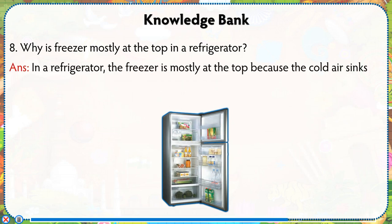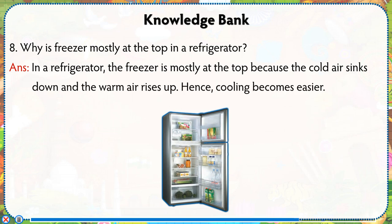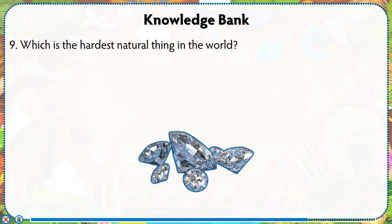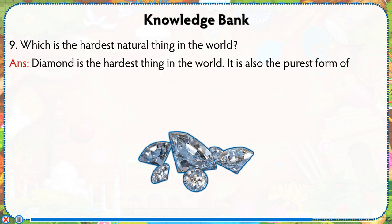Why is the freezer mostly at the top in a refrigerator? In a refrigerator, the freezer is mostly at the top because the cold air sinks down and the warm air rises up, hence cooling becomes easier.